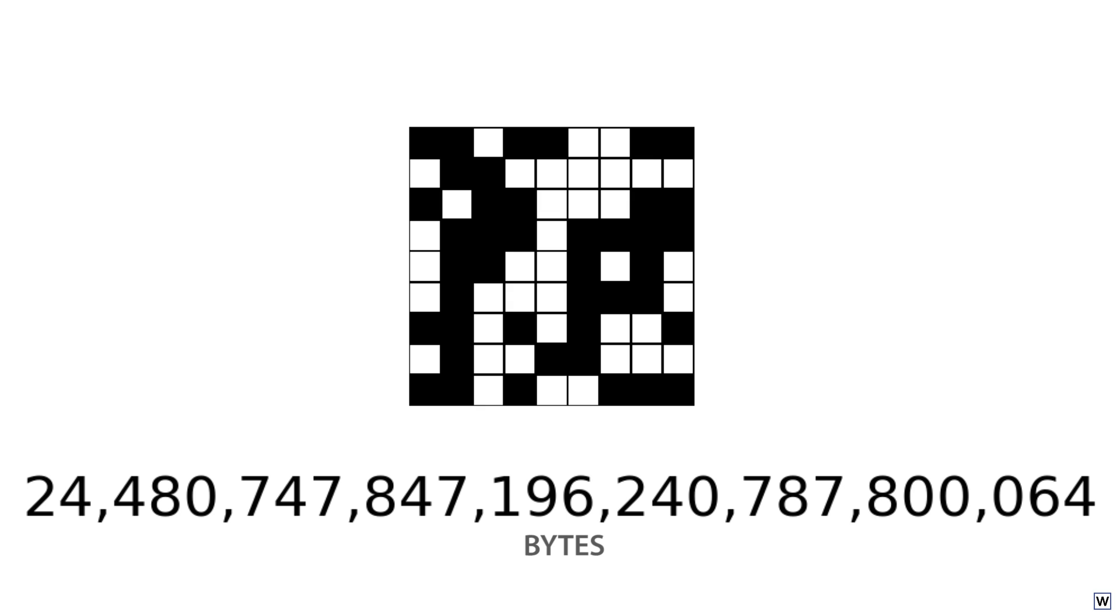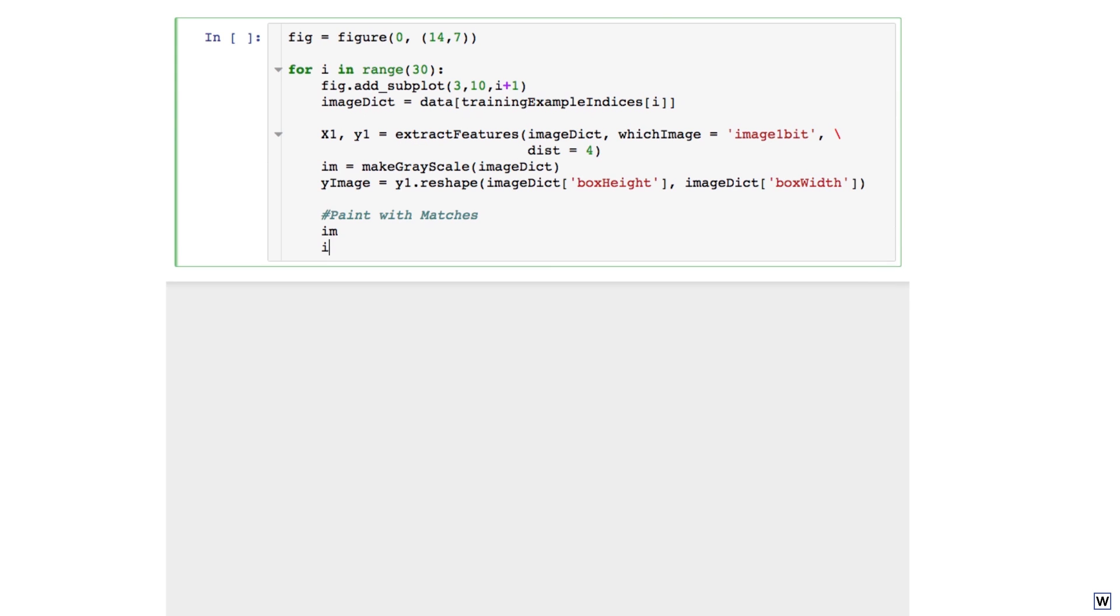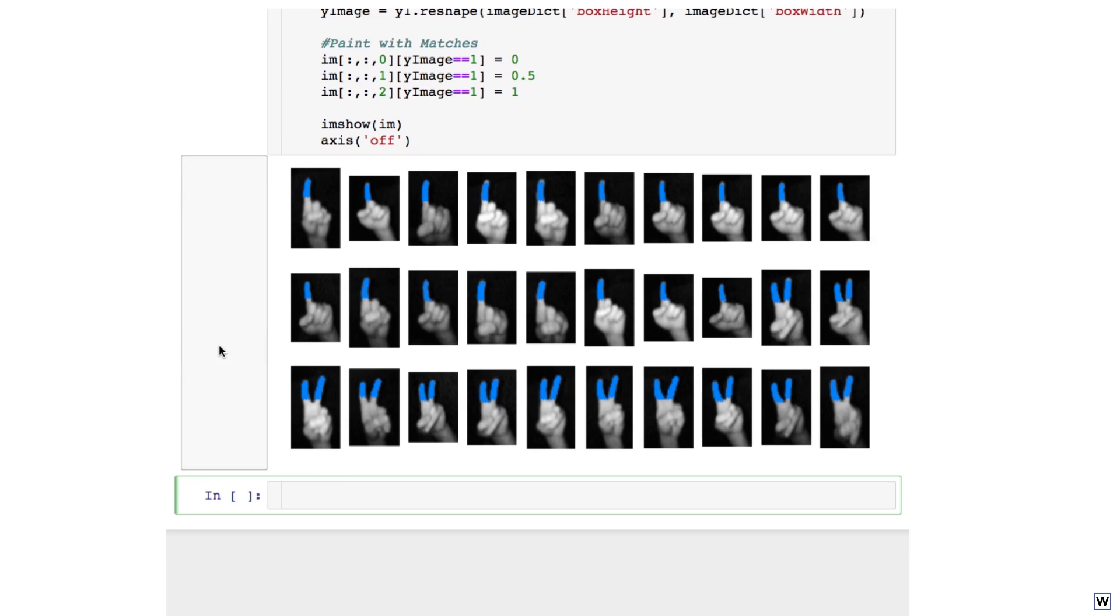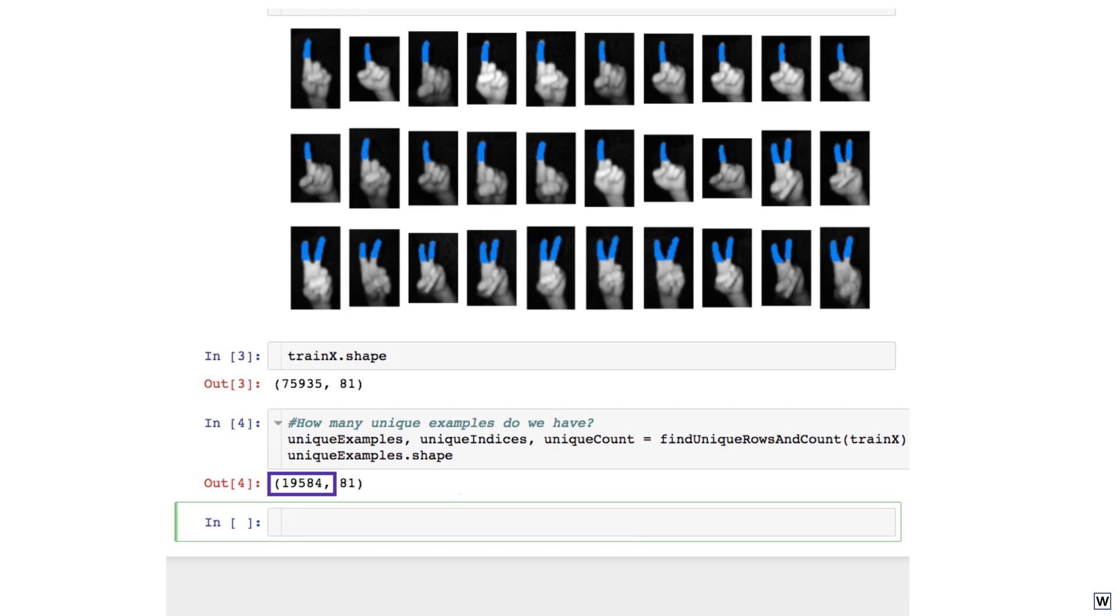Even if you could capture all possible examples, you couldn't store them. The vastness of our landscape of examples can help us understand why our memorization strategy performed so poorly. We've seen about 76,000 total examples so far, and after removing redundancies, we're left with 19,584 unique examples. This sounds like a lot, but compared to the landscape of all possible examples, it's nothing. Well, not nothing exactly. It's actually 0.000000000000000000008001%.